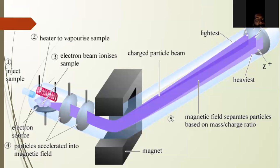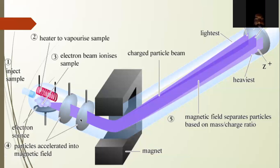Now we are discussing the diagram of the mass spectrometer. The first part is the inject sample, where an electron source is present. The second part is a heater to vaporize the sample. The third part is the electron beam, which ionizes the samples. The fourth part is the particle accelerated into the magnetic field.